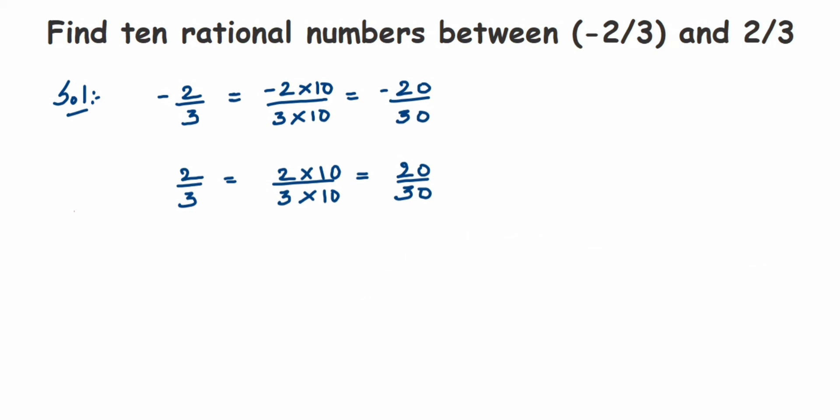So let's conclude the answer. Therefore, 10 rational numbers between minus 2 by 3 and 2 by 3 are: I am going to start with minus 19. Don't include minus 20 and 20, we have to write between them. So minus 19 by 30.